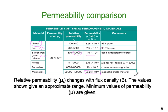Relative permeability mu r changes with the flux density B in Teslas, and the values shown give an approximate range. The minimum values of permeability are given against mu, which is the absolute permeability of a particular material — that column gives you the absolute permeability of the material.